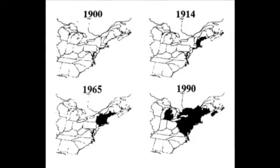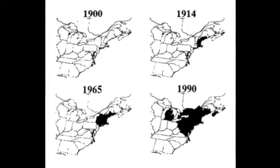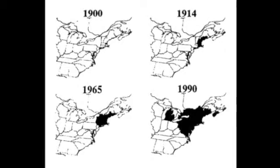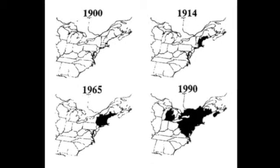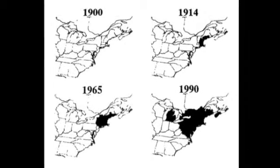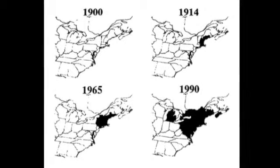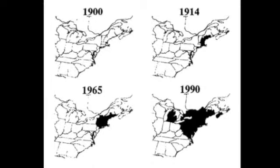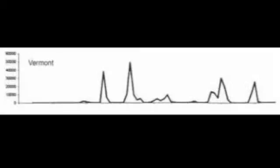The moth was brought into the USA in 1868 or 1869 as an attempt to start a silkworm industry. However, the cocoon threads of the gypsy moth are not a reliable source of silk. The gypsy moth was accidentally introduced into Boston, Massachusetts by E. Leopold Trouvelot. After ten years, outbreaks of the moth began in Trouvelot's neighborhood. Since then, the moth has expanded throughout much of New England.